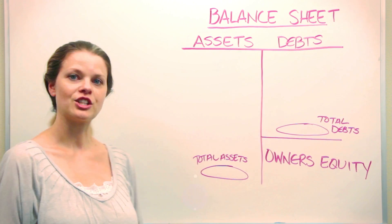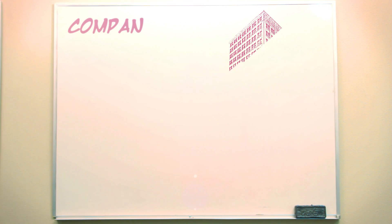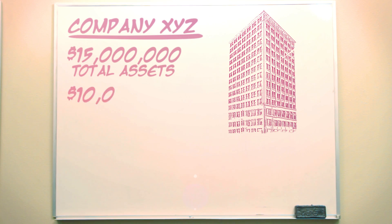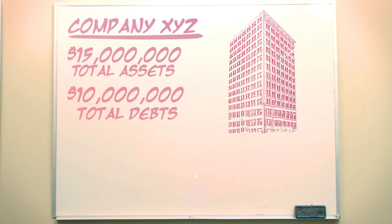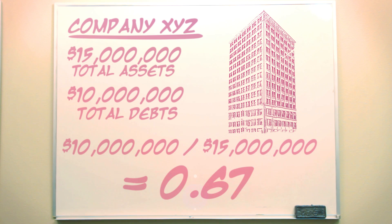Now let's look at a quick example. Assume that company XYZ has $15 million worth of total assets and $10 million worth of total debts. By using the debt ratio formula, we can see that its debt ratio is $10 million divided by $15 million, which equals 0.67.